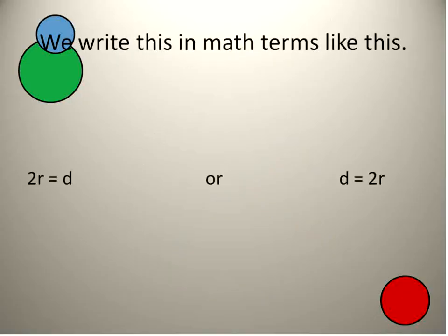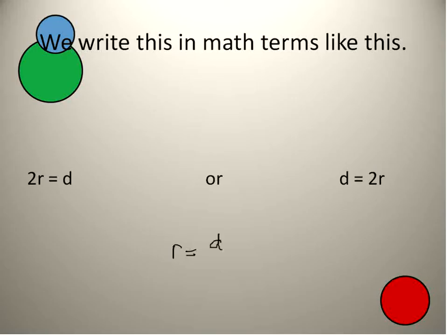The way that we write this in math terms is like this: two times the radius is equal to the diameter, or the diameter is equal to two times the radius — it means the same thing. You could also write it as: the radius is equal to the diameter divided by two. That would be another way to express the same basic idea — that one radius is half of the diameter, or the diameter is two times the radius.